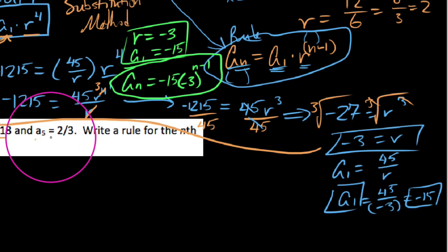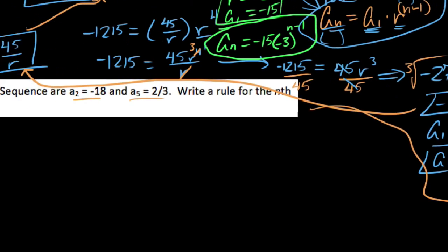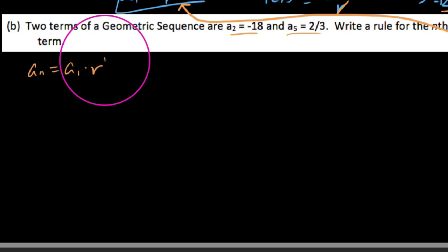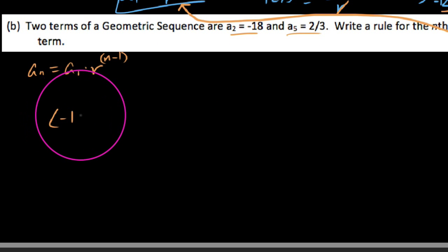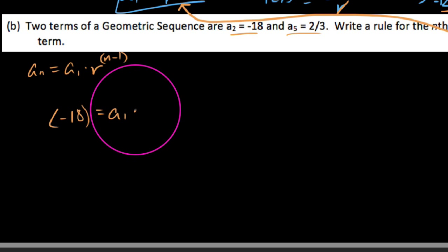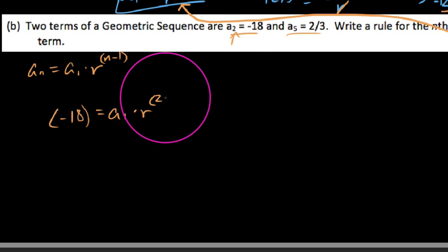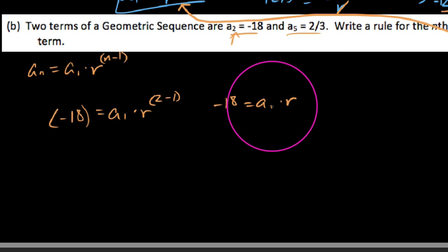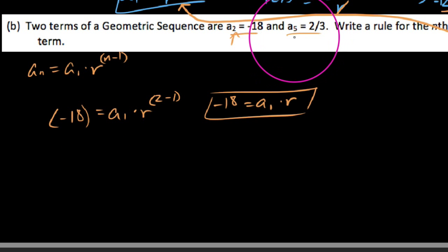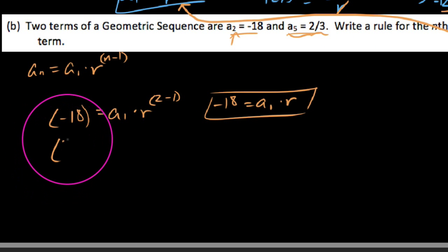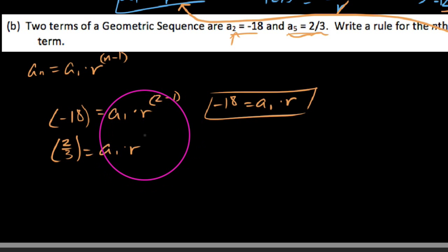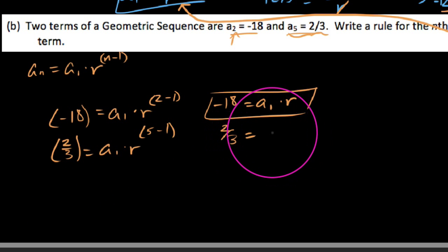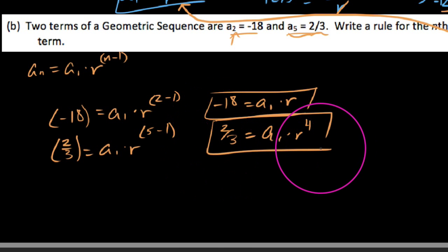Let's try another example. We'll be given two terms of a geometric sequence and solve using the substitution method again, a little bit quicker this time. Write the rule for the nth term, given a2 equals negative 18 and a5 equals 2 thirds. Our rule is: a sub n equals a1 times r to the n minus 1. Plugging in the first data point: negative 18 equals a1 times r to the 2 minus 1, giving us negative 18 equals a1 times r to the first. Then plugging in a5: 2 thirds equals a1 times r to the 5 minus 1, giving us 2 thirds equals a1 times r to the fourth.